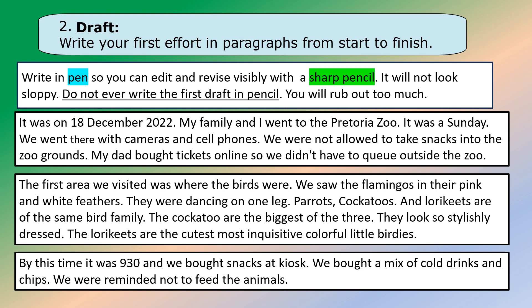Here's our first paragraph: 'It was on 18 December 2022. My family and I went to the Pretoria Zoo. It was a Sunday. We went there with cameras and cell phones. We were not allowed to take snacks into the zoo grounds. My dad bought tickets online so we didn't have to queue outside the zoo.' The first area we visited — that's my second paragraph — was where the birds were. We saw flamingos in their pink and white feathers, dancing on one leg. Parrots, cockatoos, and lorikeets are of the same bird family. The lorikeets are the cutest, most inquisitive, colorful little birdies. By 9:30 we bought snacks at the kiosk — cold drinks and chips. We were reminded not to feed the animals.